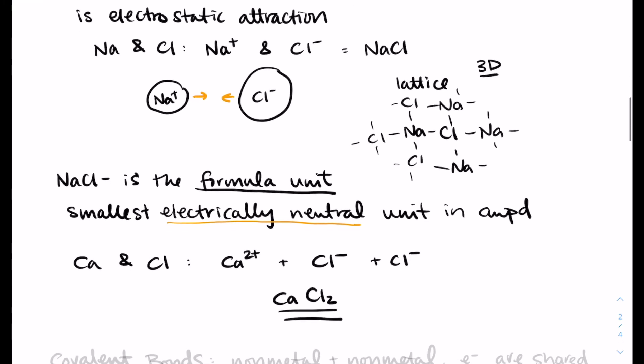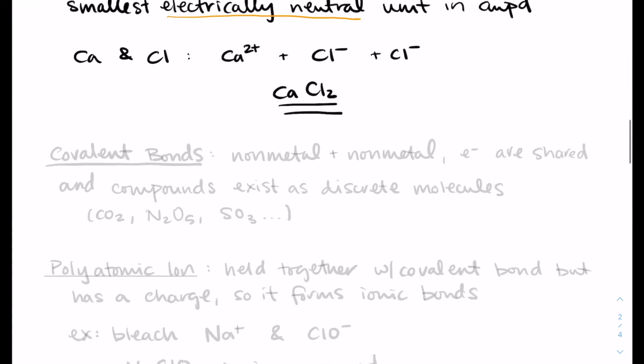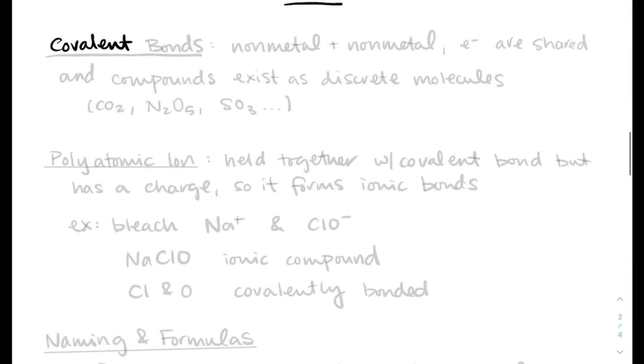A covalent bond exists between a nonmetal and a nonmetal. So just things on the right side of the periodic table. And in a covalent bond, the electrons are shared. And these compounds exist as discrete molecules. So not a lattice, but in carbon dioxide, so CO2, I have individual CO2 molecules in that sample.